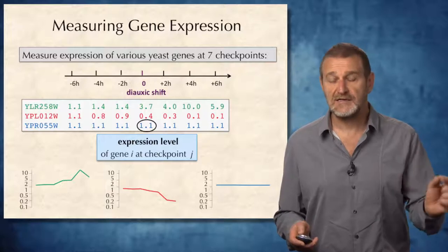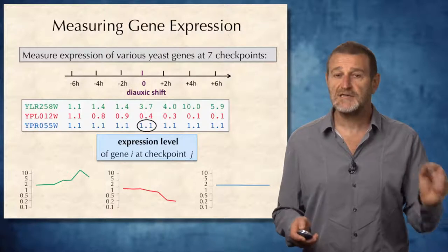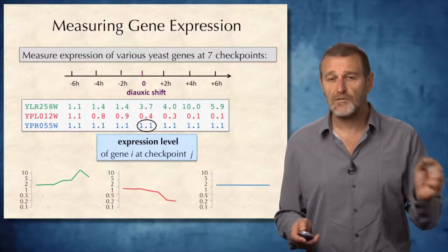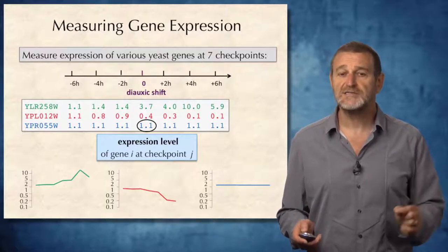However, the green gene most likely is implicated in the diauxic shift because its expression increases. And the red gene is also most likely implicated in the diauxic shift because its expression is decreasing.